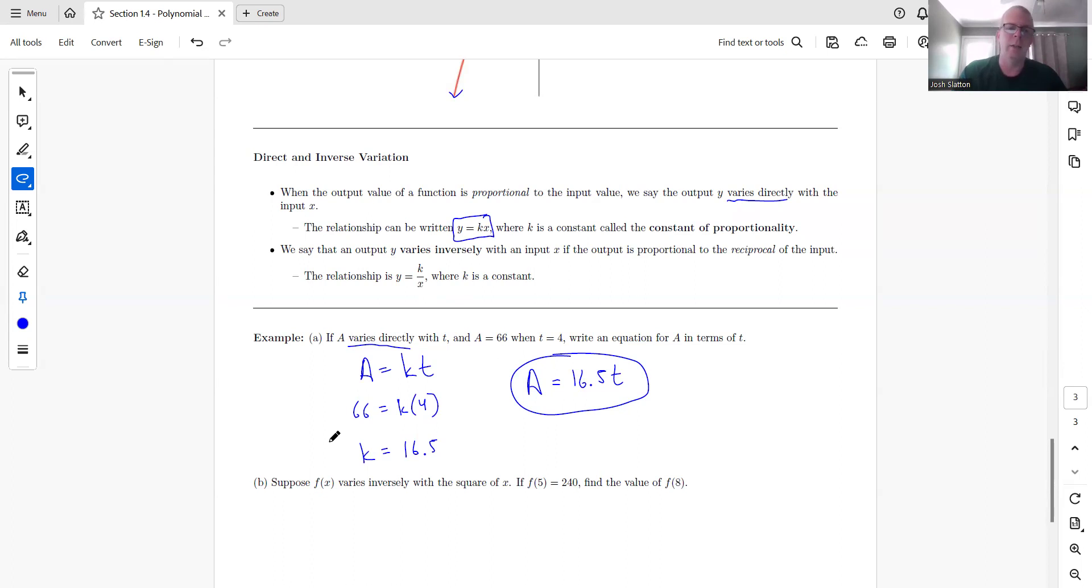The other way is, coming back up here, we say the output Y varies inversely as opposed to directly with the input X, if the output is proportional to the reciprocal of the input. And so here we have the formula Y equals K over X. So when it's directly, X is in the numerator. When it's inverse, it is in the denominator.